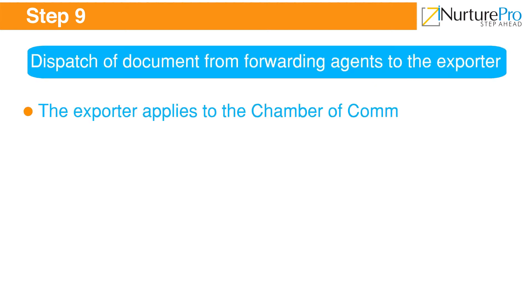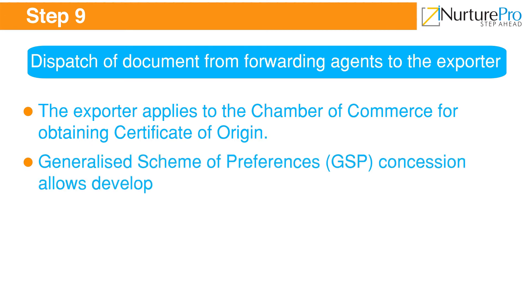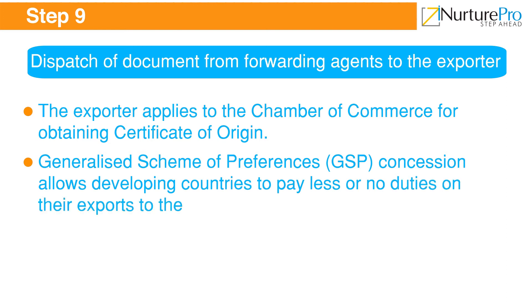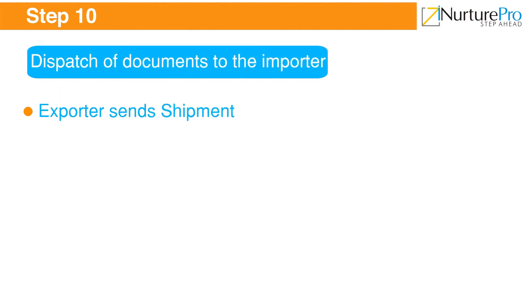After receiving necessary documents, the clearing and forwarding agents receive goods from the railway station or road transport and transfer them to the warehouse. They also obtain clearance from port authorities to receive the cargo in the shipment shed. To get customs clearance, the agents must submit the shipping bill, contract form, letter of credit, commercial invoice, GR form, inspection certificate, AR4/AR4A form, and packaging list. The agents must then get clearance and permission from the shed superintendent, dock appraiser, and preventive officer to transfer goods to the ship.